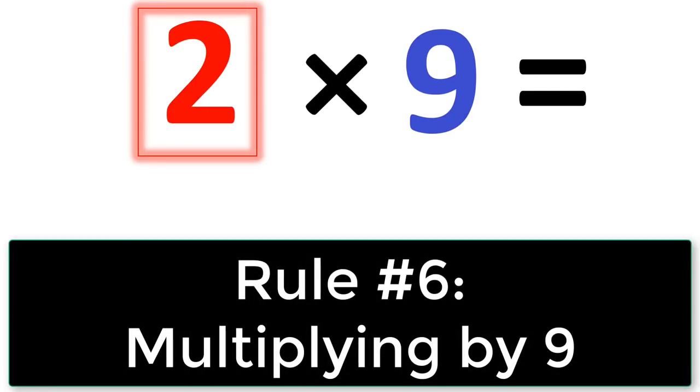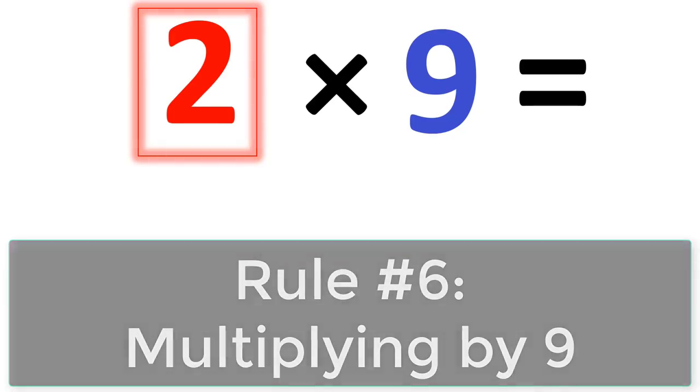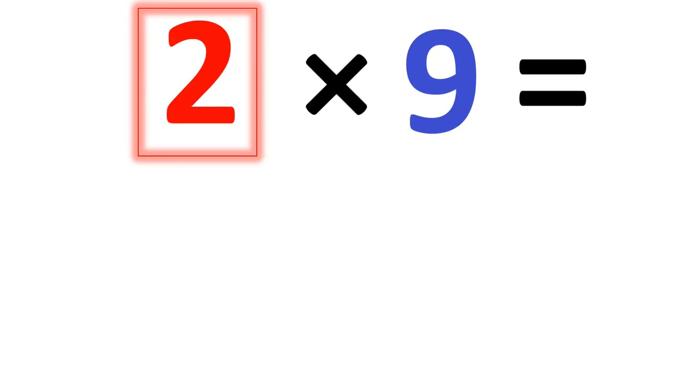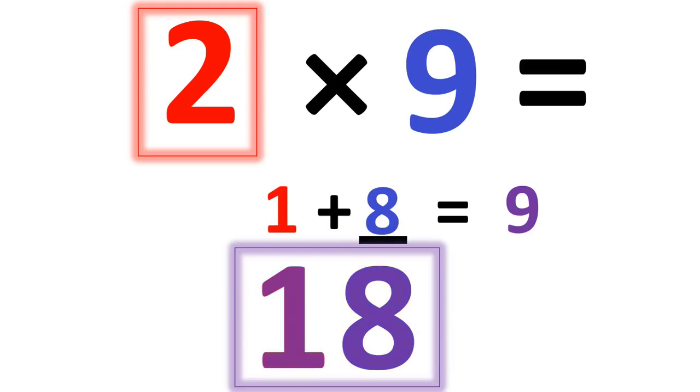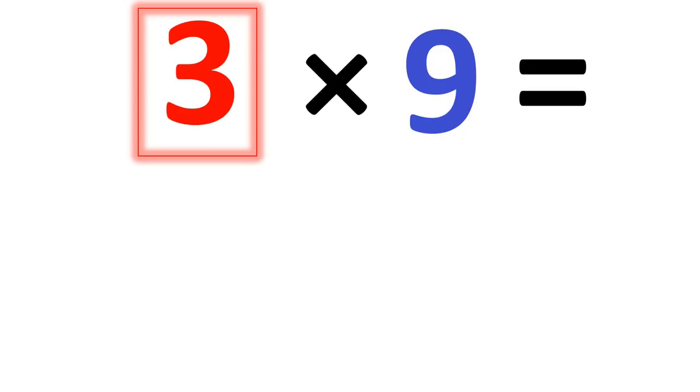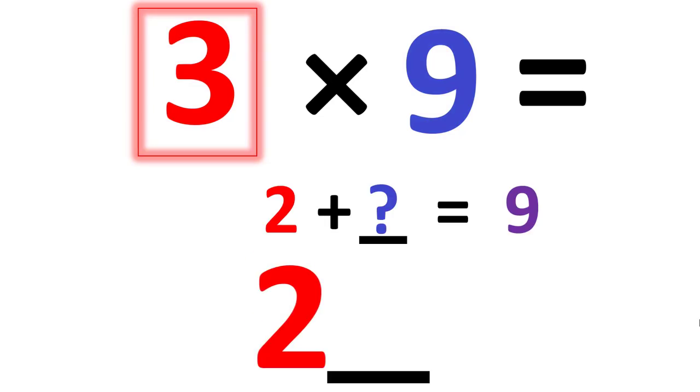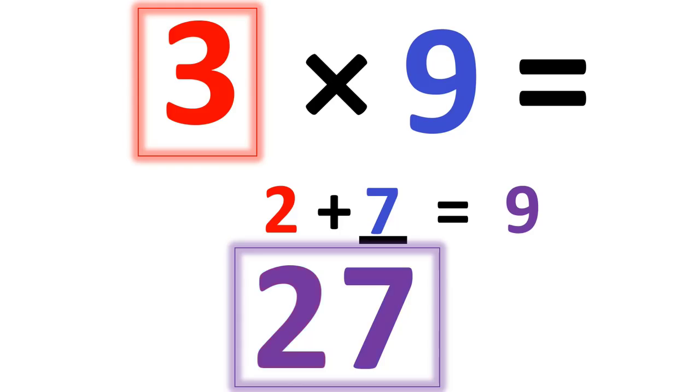So now for our last rule, which is the rule of 9. When you multiply a number times 9, such as 2, you take that first number 2 and you take 1 less than that number 2. So 1 less than 2 is 1. Then you say 1 plus what number equals 9? Well, 1 plus 8 equals 9. So 8 becomes your second number. So the answer is 18. Or when you have 3 times 9, 1 less than 3 is 2. Then you say 2 plus what number equals 9? 7. So 27. So forth and so on.